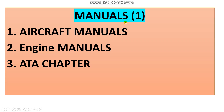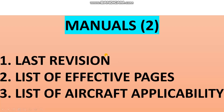I will ask you about the maintenance manuals. You will reply: Aircraft Maintenance Manual, Aircraft Illustrated Parts Catalog, Wiring Diagram, Engine Manuals, Build-Up Manuals, Overhaul Manuals. Then I will ask about the ATA chapters — give me the numbers and definitions, and when you use the manuals. What about the last revision, the List of Effective Pages, and the List of Aircraft Applicability or effectivity?